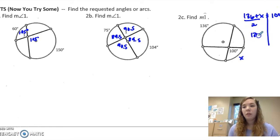So 136 plus x equals 200. Or our arc measure there would be 64. Alright, one more page.